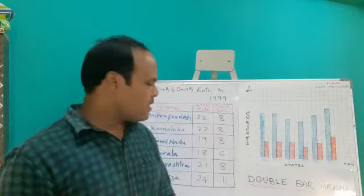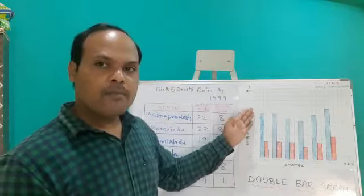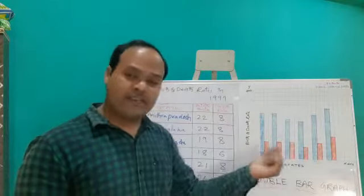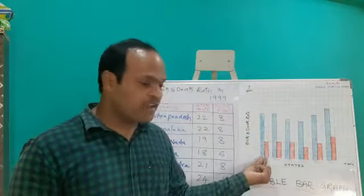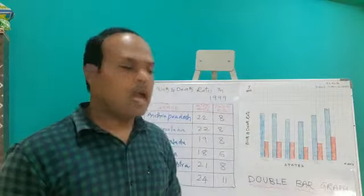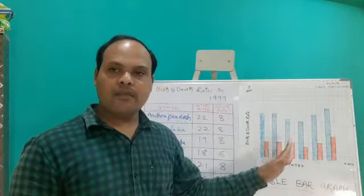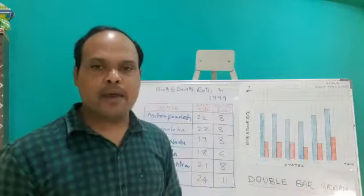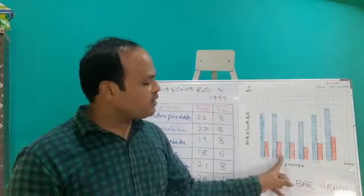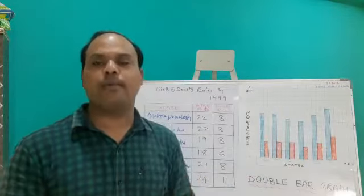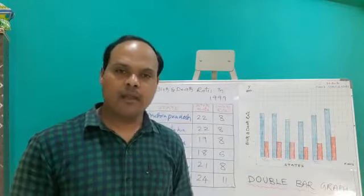Next, the width of each bar should be same. So I am taking width of each bar is 1 unit only. And after each bar, we have to give equal gap between the bars. Here also, I am leaving 1 unit between each double bar.